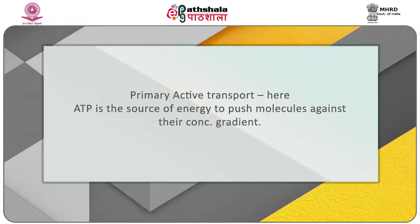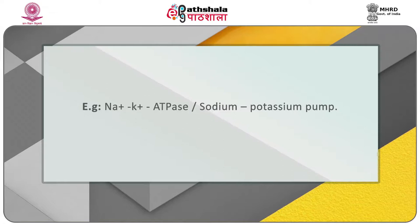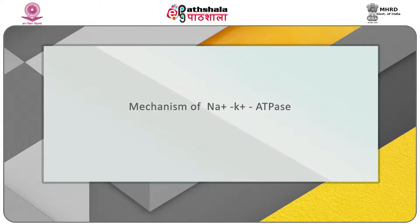In primary active transport, ATP is the source of energy to push molecules against their concentration gradient. The secondary transport uses the potential energy of one molecule to push another molecule. An example is sodium-potassium ATPase — a sodium-potassium ATPase pump where ATPase uses energy from ATP to pump sodium out and potassium into the cell. Now, the mechanism of sodium-potassium ATPase.